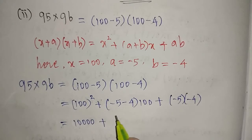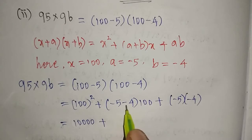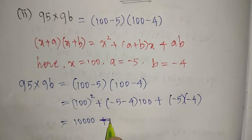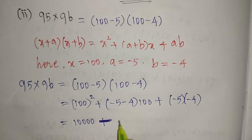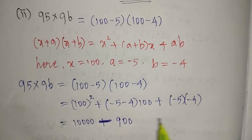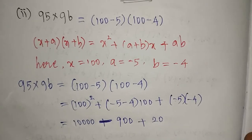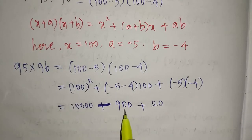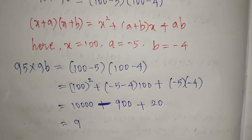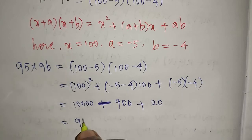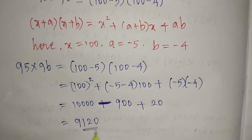Now we simplify: 100 squared is 10,000. Minus 5 plus minus 4 is minus 9, so minus 9 into 100 gives minus 900. Minus 5 times minus 4 is plus 20. So from 10,000 subtract 900 to get 9,100, then add 20, giving us 9,120. That is our required answer for 95 into 96.